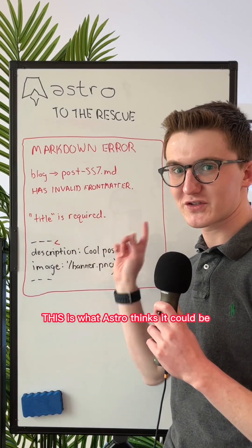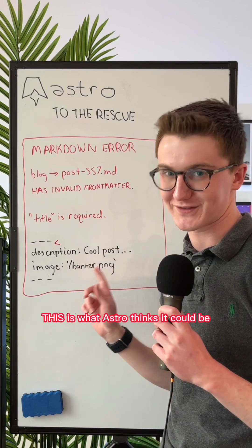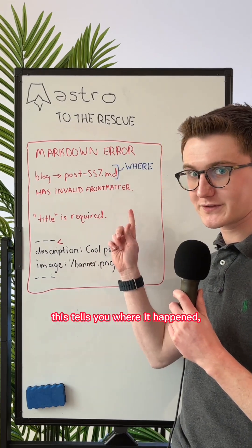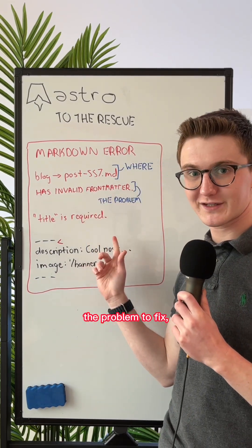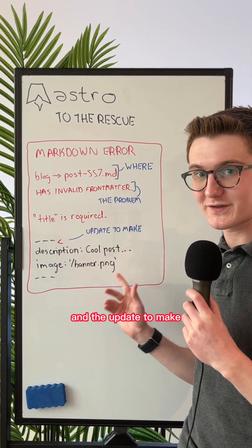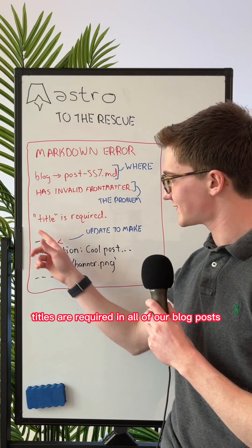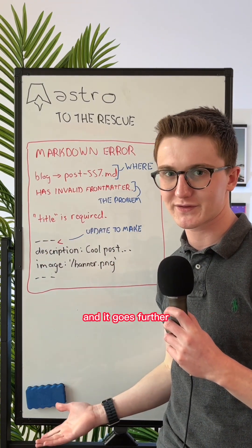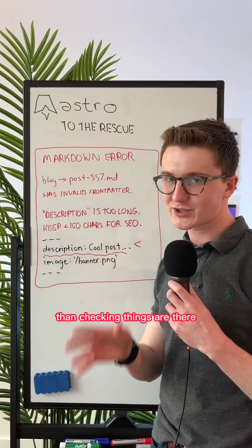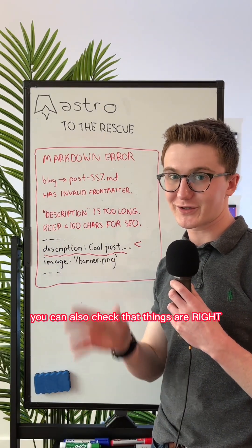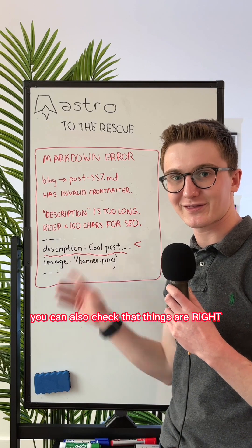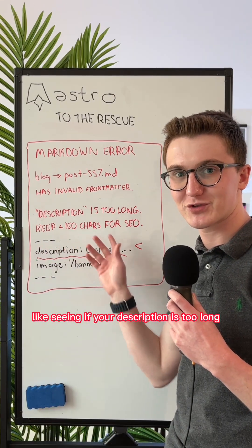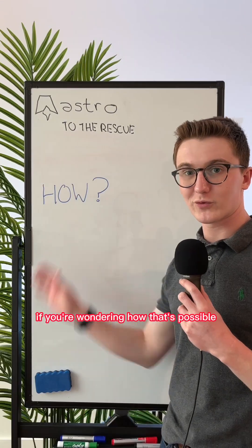This is what Astro thinks it could be. This tells you where it happened, the problem to fix, and the update to make. In this case, titles are required in all of our blog posts. And it goes further in checking things are there — you can also check that things are right, like seeing if your description is too long for good SEO.